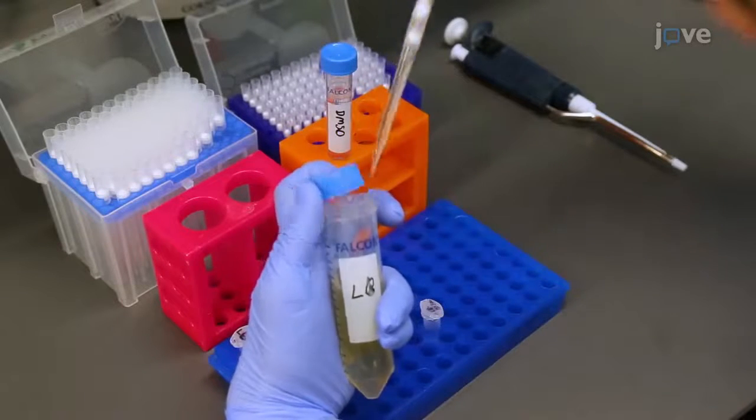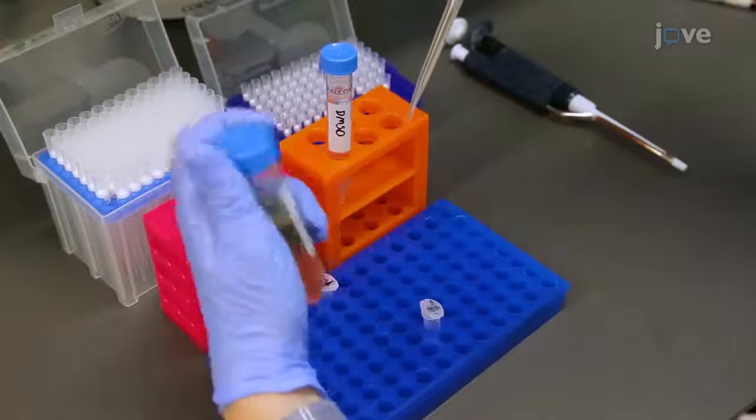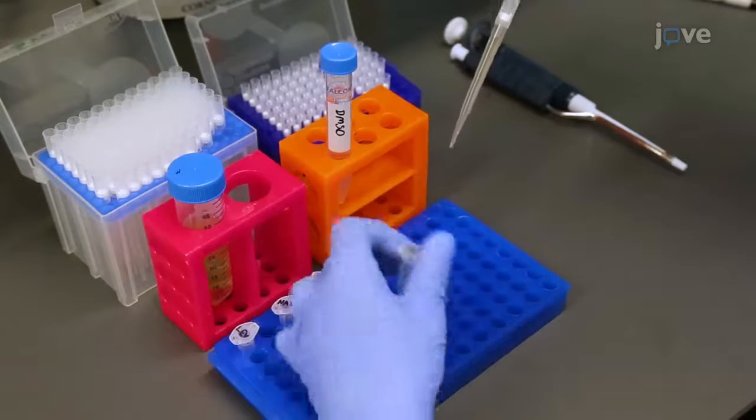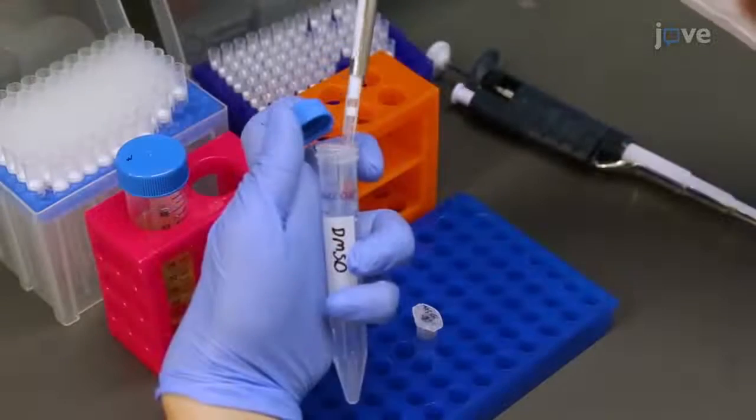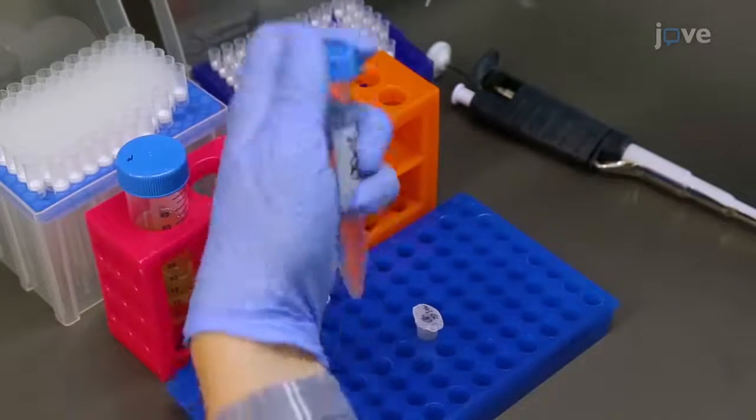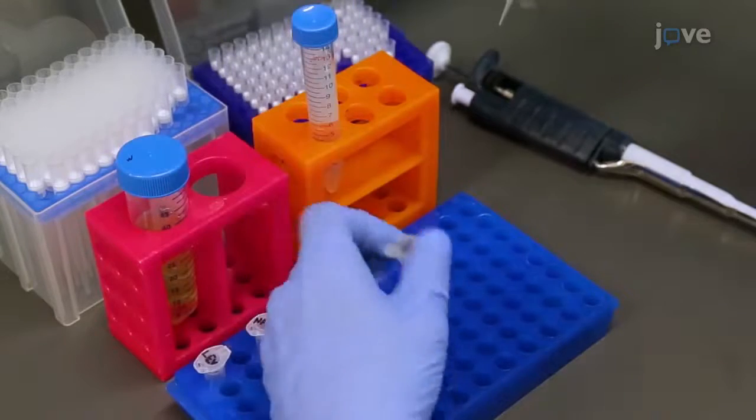To prepare for serial dilutions of these drugs, mix 990 microliters of LB media and 110 microliters of DMSO to make LB 10% sol.